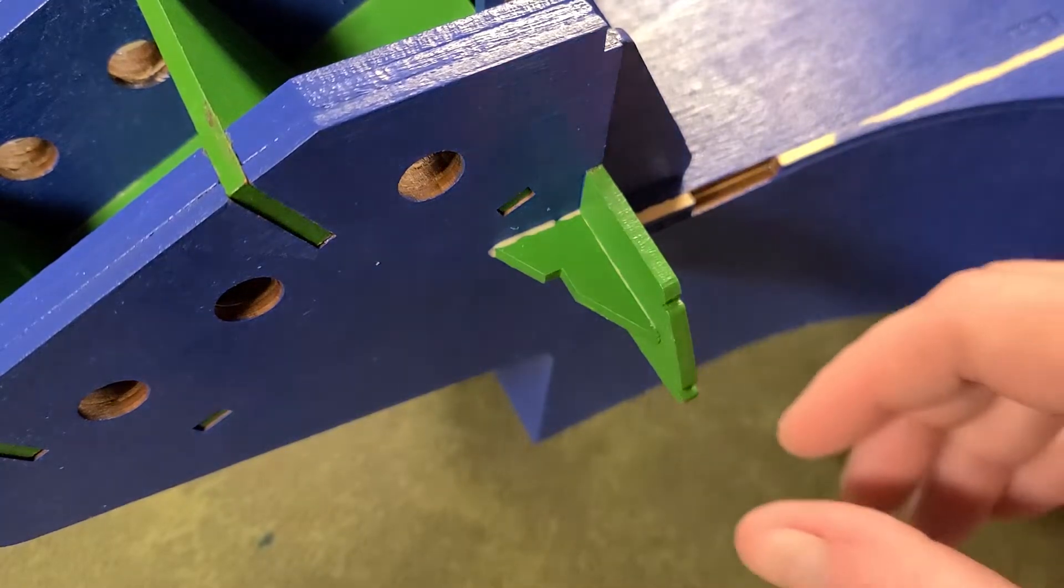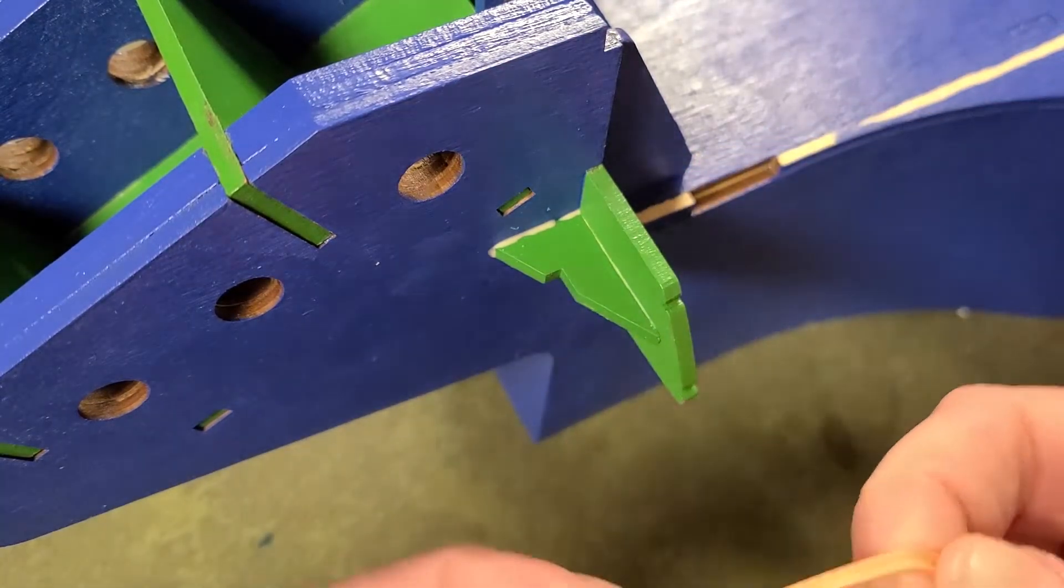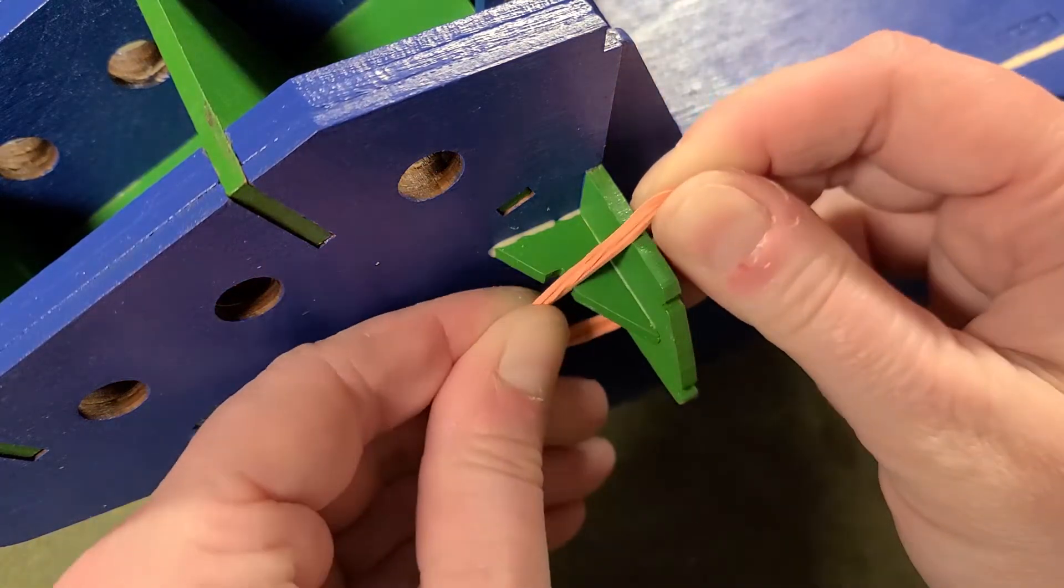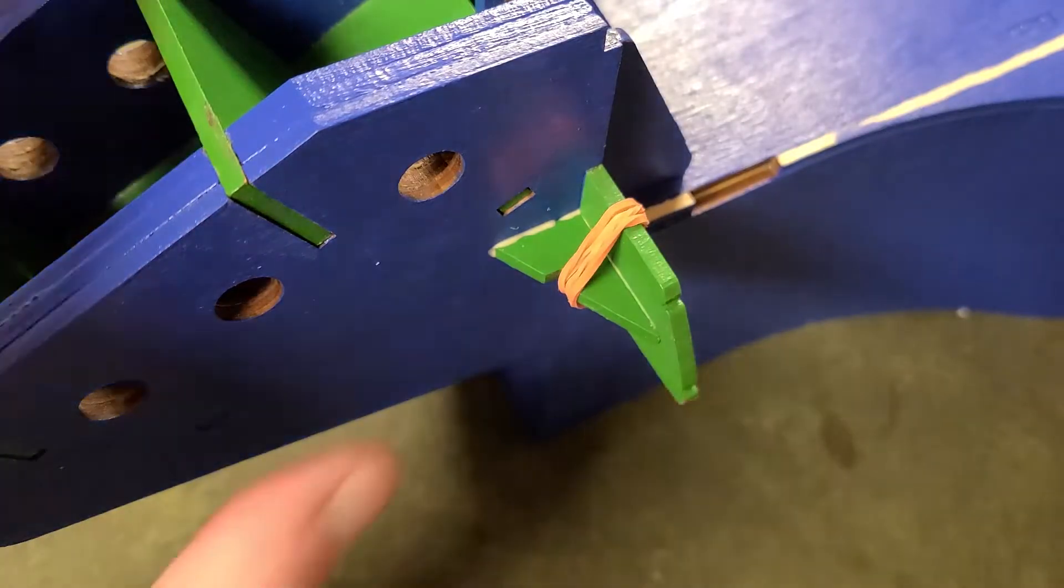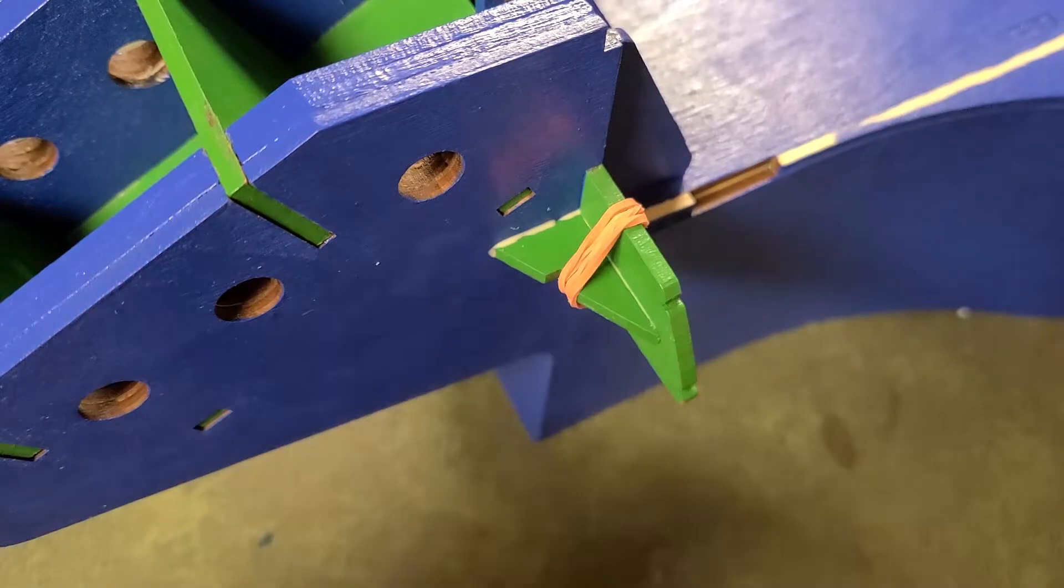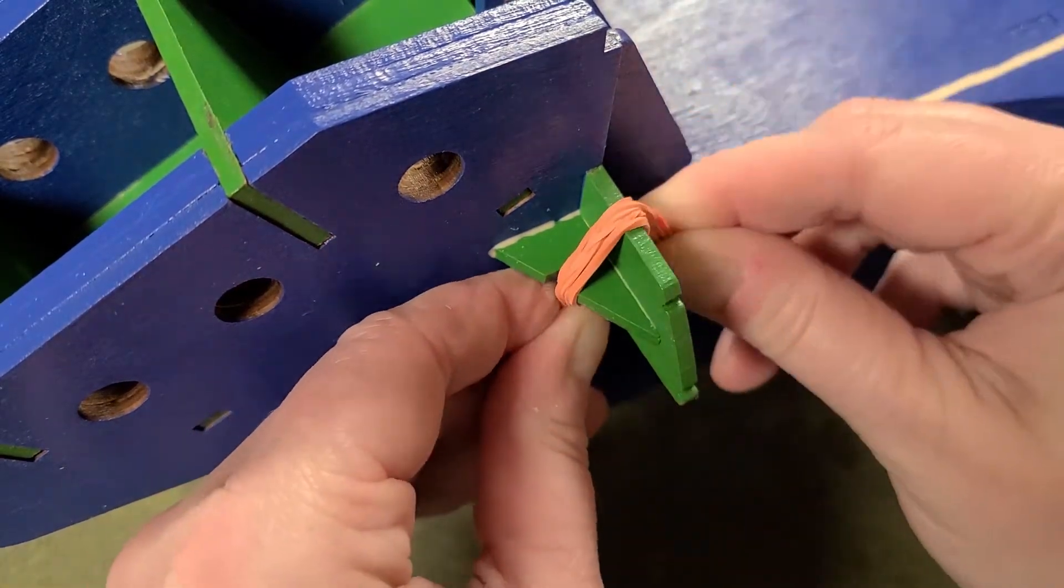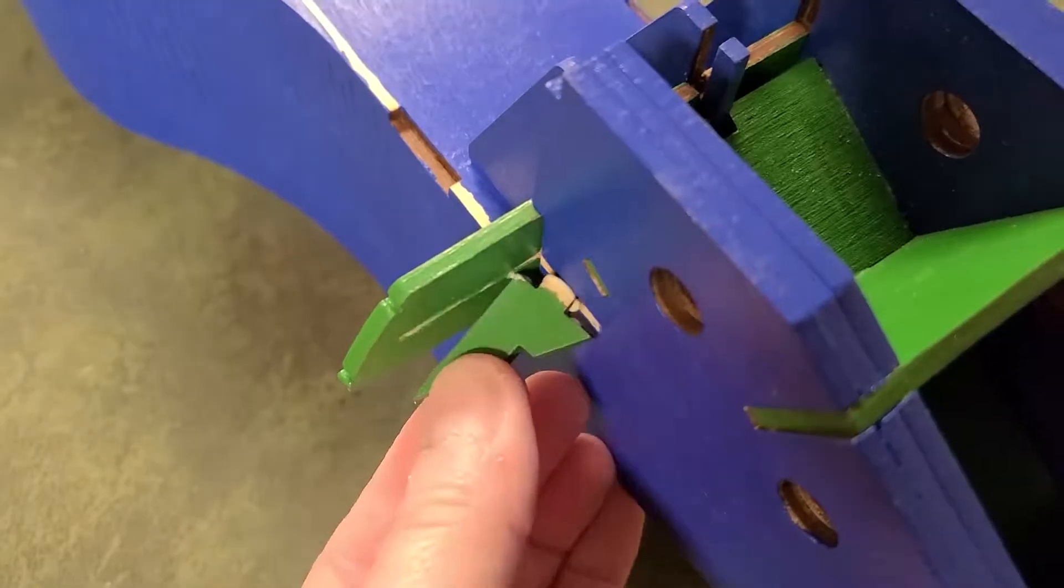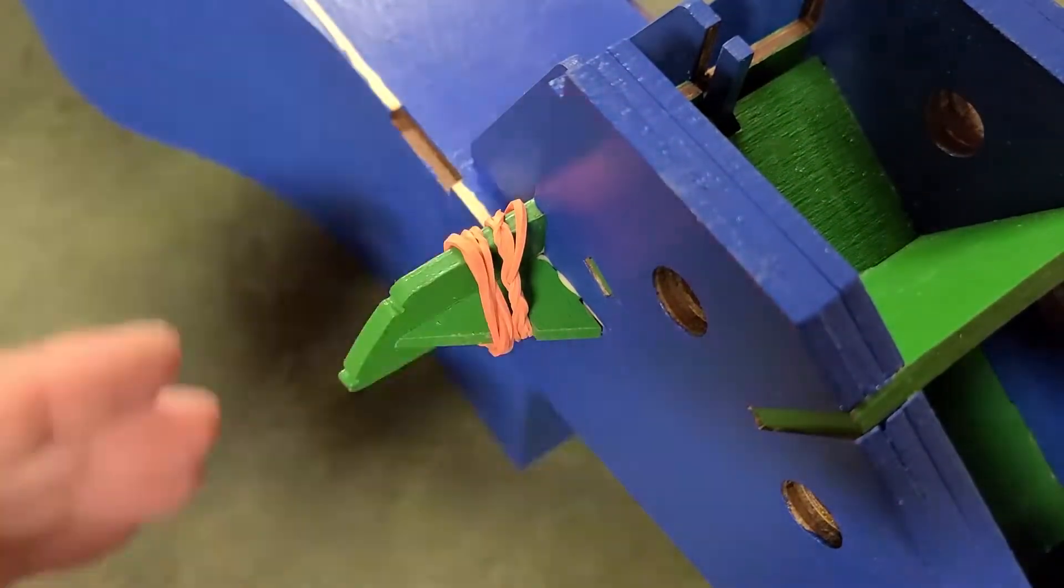I don't know if this little notch is here by design or just an artifact of the design process, but it does make a very wonderful place for clamping these little triangles into place. I'm back with my rubber bands, but use whatever method strikes your fancy. One side done, and other side done.